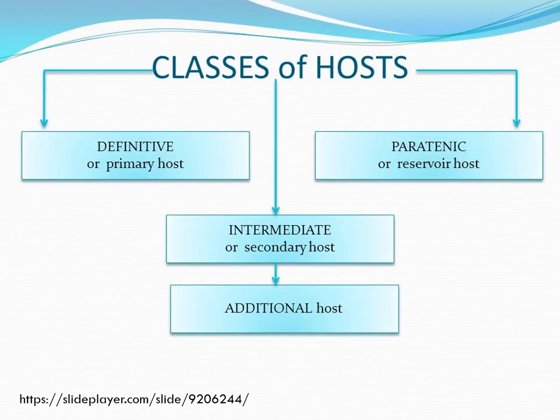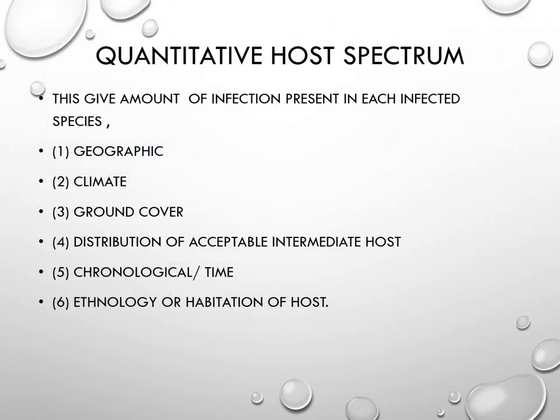The classes of hosts include: the definite or primary host, the paratenic host, the reservoir host, the intermediate or secondary host, and sometimes additional hosts for completion of the life cycle. We can also study the quantitative host spectrum, which describes the amount of infection present in each infected species. This depends on geographic location, climate and season, ground cover, distribution and abundance of acceptable intermediate hosts, chronological time of day or year when hosts are active, and the ethology or habitation of the host.